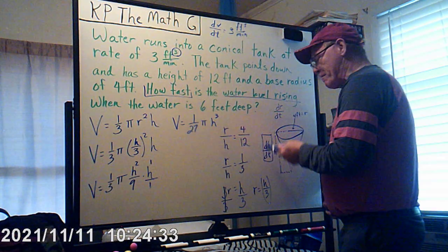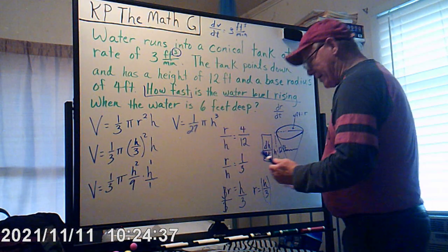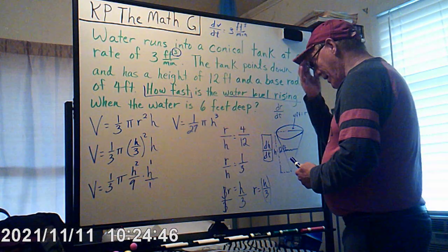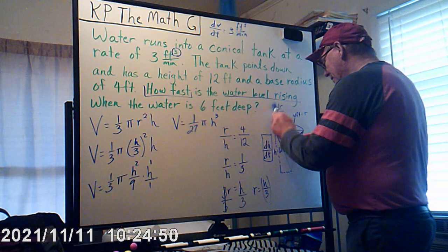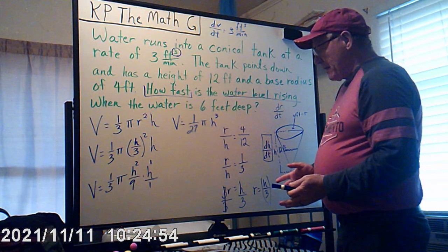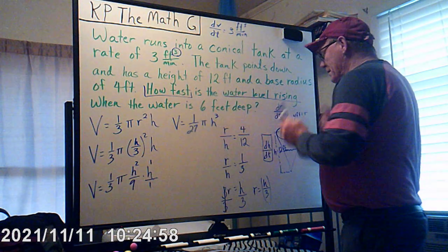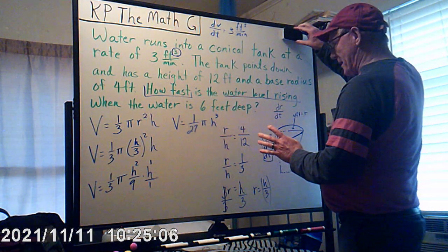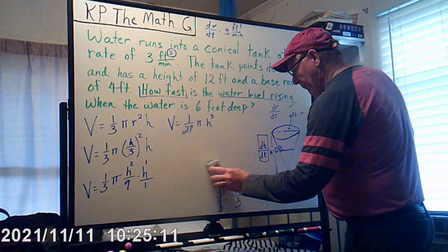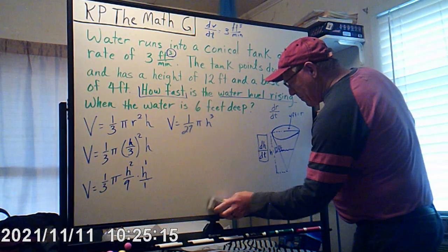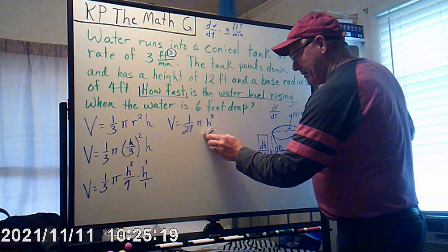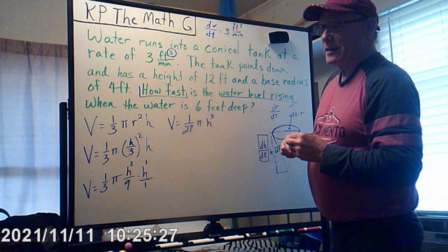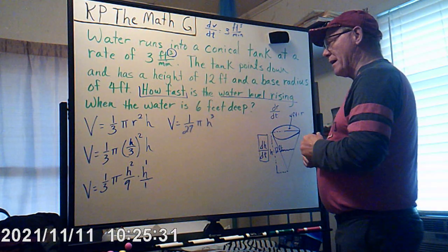Note: you could set up the ratio as h/r = 12/4 and still get the same result. If they had asked for dr/dt you'd solve for h instead; since we're looking for dh/dt we solve for r. The beauty of this is that instead of having both r and h, we just have h — that makes life a whole lot easier.